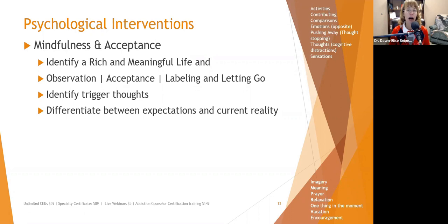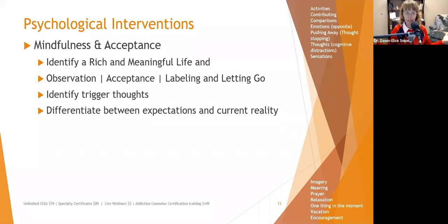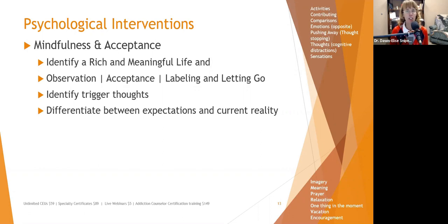Help people practice observation, acceptance, labeling, and letting go — observing what it is, accepting it as what it is, being that fly on the wall, labeling it for what it is. Help them identify trigger thoughts: what triggers your anxiety and what types of self-talk trigger it? Encourage them to differentiate between expectations and current reality.